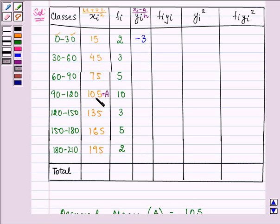45 minus 105 gives us minus 60. Minus 60 divided by 30 gives us minus 2. So we have minus 3, minus 2, minus 1, 0, 1, 2, 3.